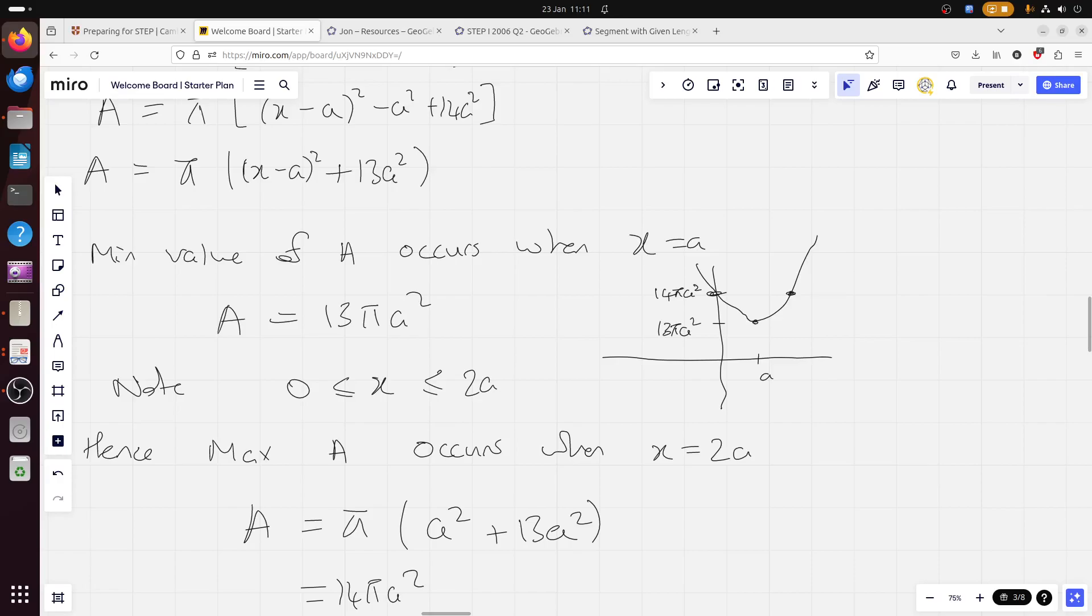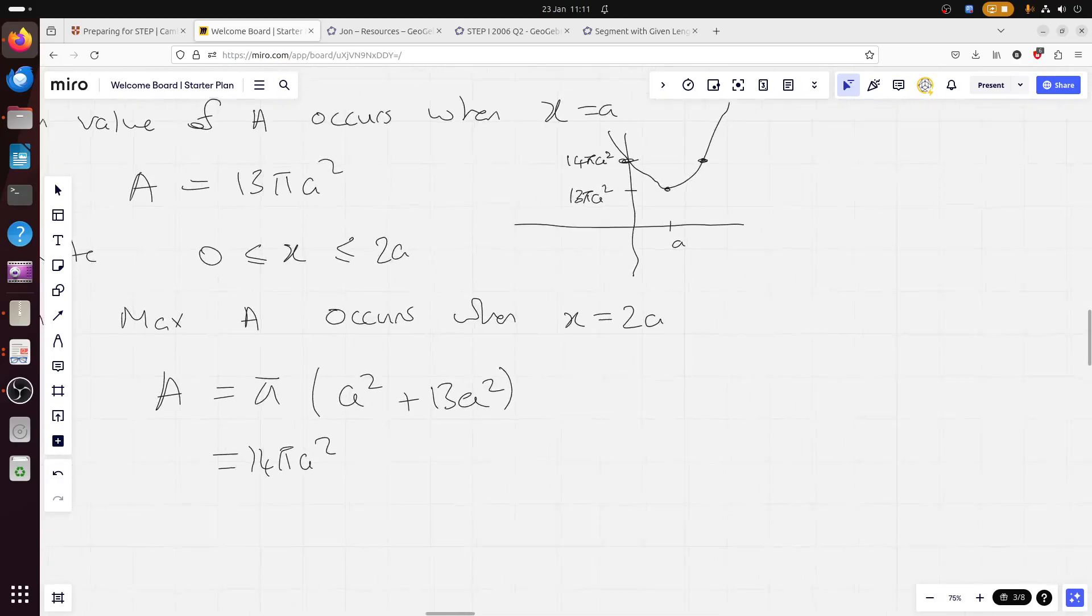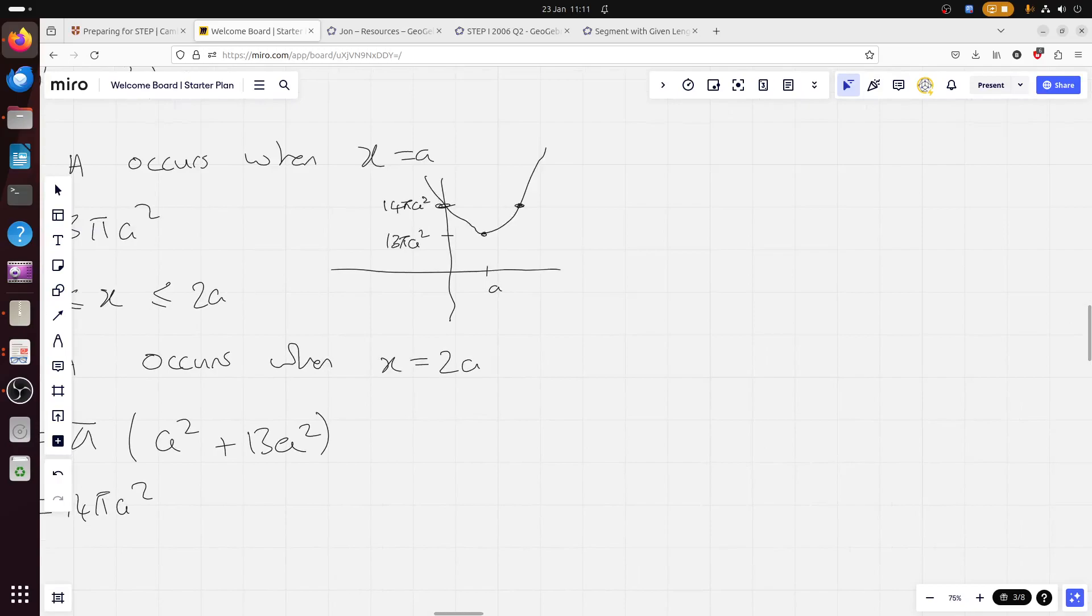I'm not sure if the examiner wanted you to really justify why this has to be a maximum. I think a quick sketch shows it really nicely. So, here, max value, since we've only got this defined domain, if you like, if you're into range and domain, is just that x is between 0 and 2a. Hence, the range is that y, or A in this case, is stuck between 13 pi a squared and 14 pi a squared. Apologies for my really shoddy handwriting there.